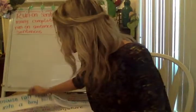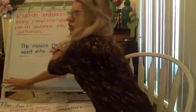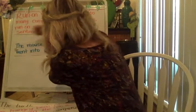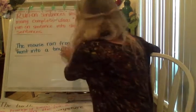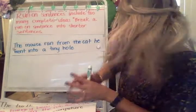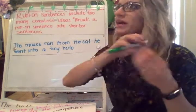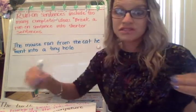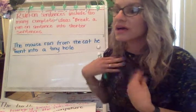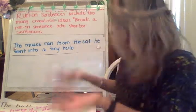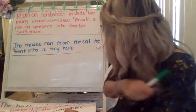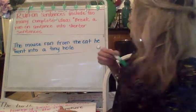Remember, all of these are going to be run-on sentences, so they have way too much information. Oftentimes you can tell a run-on sentence because you're trying to say all of these words in one breath but you're not able to, and you run out of breath. For example: the mouse ran from the cat, went into a tiny hole.